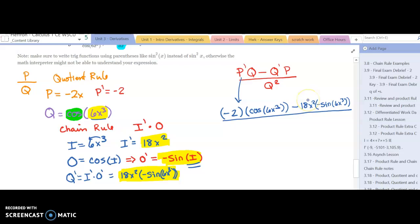All over our Q squared. Here is Q, cosine of 6x cubed, all squared, or if you wanted to write it cosine squared of 6x cubed. Those are the same thing.